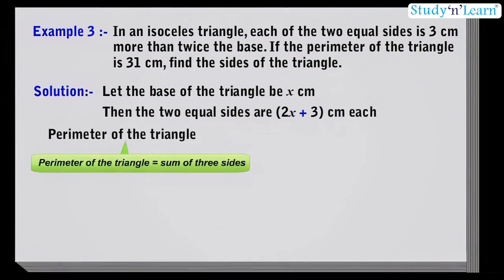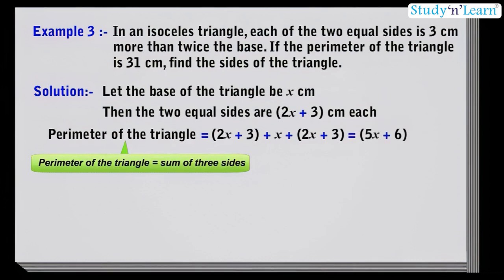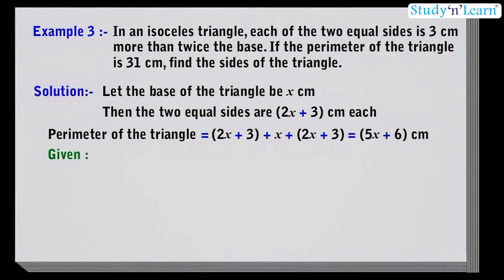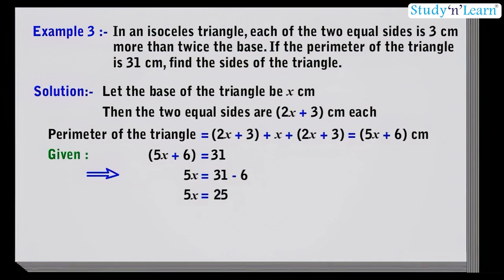The perimeter of the triangle, we know, is the sum of the three sides, given by 2x plus 3 plus x plus 2x plus 3, which is equal to 5x plus 6 cm. It is given in the question that the perimeter is equal to 31 cm. That means 5x plus 6 is equal to 31. This implies 5x is equal to 31 minus 6, which is equal to 25 cm.